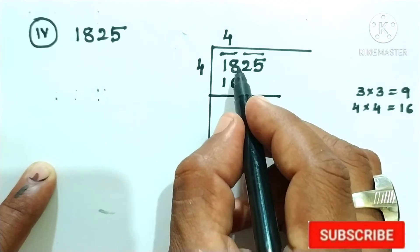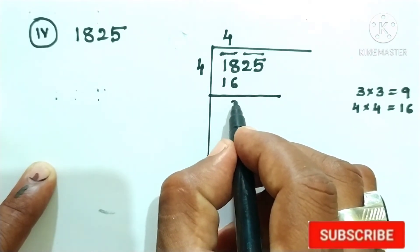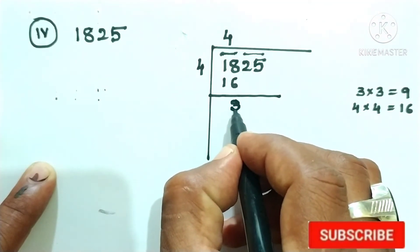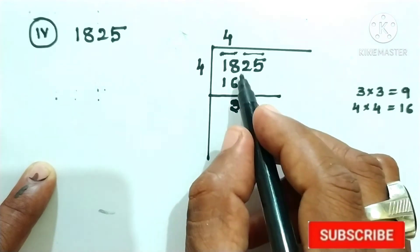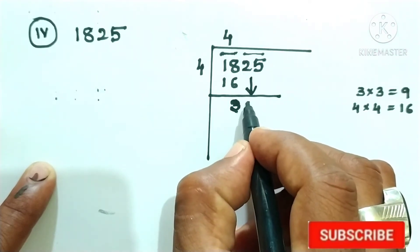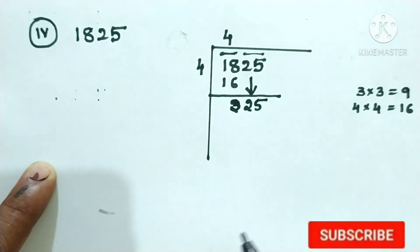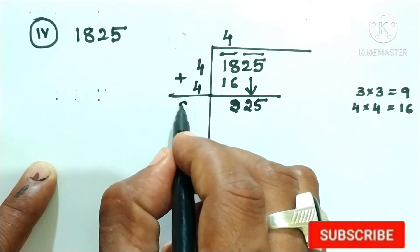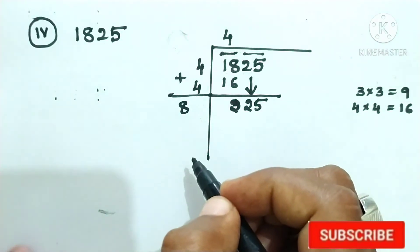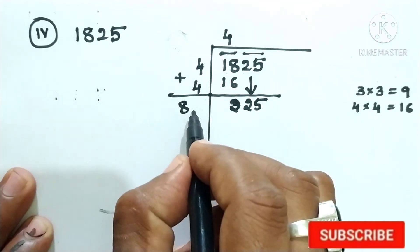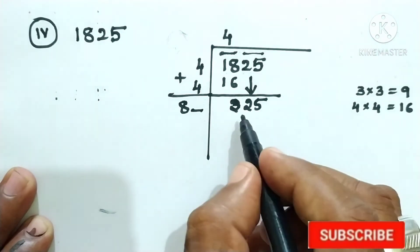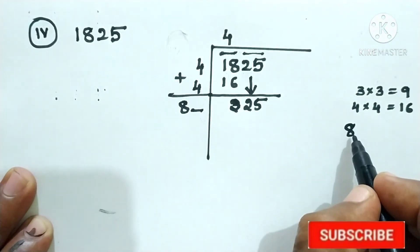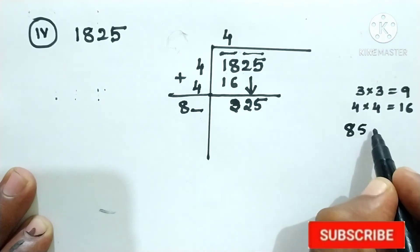Subtract 18 minus 16, giving a remainder of 2. For the next group, bring down 25. Now take 4 and double it: 4 plus 4 is 8. So the next divisor starts with 8, and we fill in the blank. If you take 80, then 85 into 5.